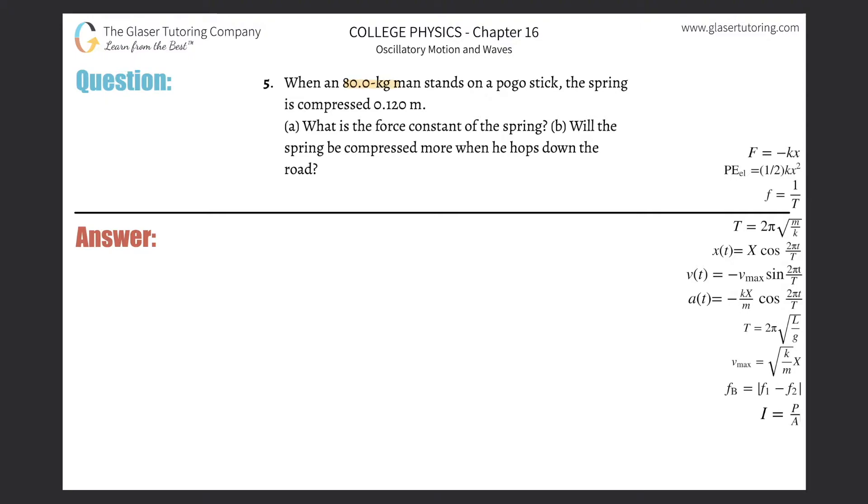Number five: when an 80 kilogram man stands on a pogo stick, the spring is compressed 0.12 meters. What is the force constant of the spring? So we can simply use Hooke's law. It says the force that the spring produces on an object will be equal to negative of the spring constant of that particular spring.